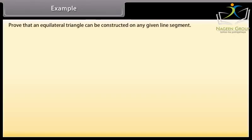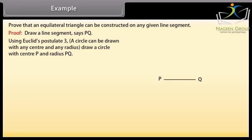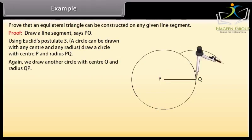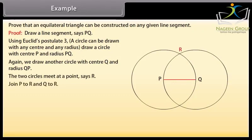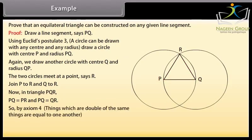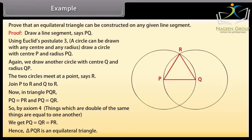Example. Let us solve an example now. Prove that an equilateral triangle can be constructed on any given line segment. Draw a line segment, say PQ. Using Euclid's postulate 3, which says that a circle can be drawn with any center and any radius, we will draw a circle with center P and radius PQ. Again, we draw another circle with center Q and radius QP. The two circles meet at a point, say R. Join P to R and Q to R. Now in triangle PQR, PQ is equal to PR and PQ is equal to QR. So by axiom 4, things which are double of the same things are equal to one another, we get PQ equals QR equals PR. Hence, triangle PQR is an equilateral triangle.